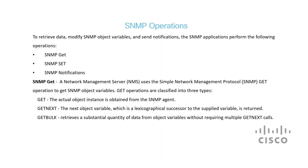No matter what version of SNMP you use, the basic set of commands or operations are the same — they're used to gather and organize information for monitoring and management. SNMP Get is for when the network management needs to collect specific data from an agent, and it's broken down into a few variations: Get fetches a specific data point, Get Next goes to the next data point in the sequence, and Get Bulk gathers a lot of data at once to save time.